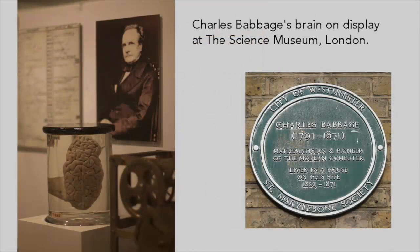Babbage played a part, along with John Herschel and George Peacock, in introducing the Leibnizian D notation for calculus into British mathematical use, in place of the less flexible dot notation devised by Isaac Newton. Among Babbage's many less famous accomplishments was his cracking of the Vigenère cipher, a discovery that helped English military campaigns, but wasn't published for several years, by which time the credit had gone instead to Friedrich Kasiski, who broke the code some years after Babbage.